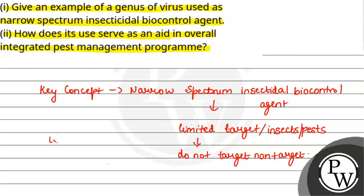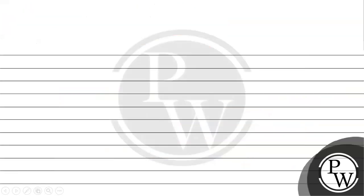Now let's look at examples of such viruses. Nucleopolyhedroviruses — NPV — is a very common example, and they are commonly used as a narrow spectrum insecticidal biocontrol agent.